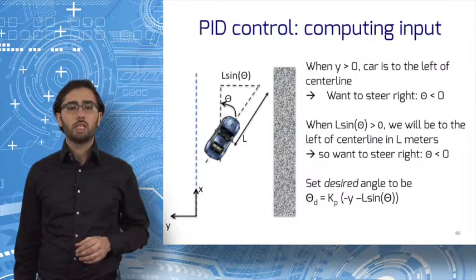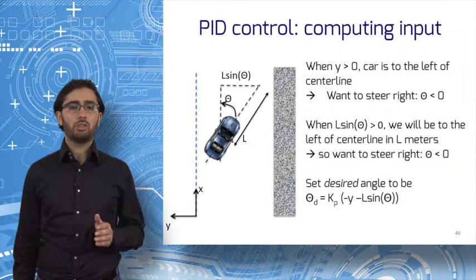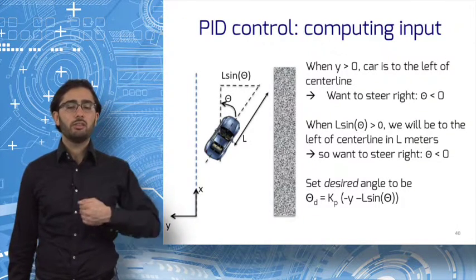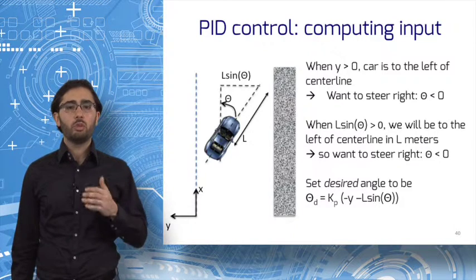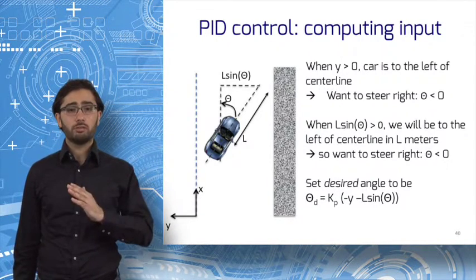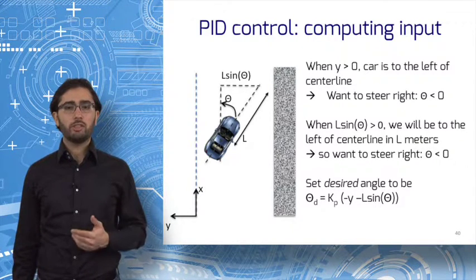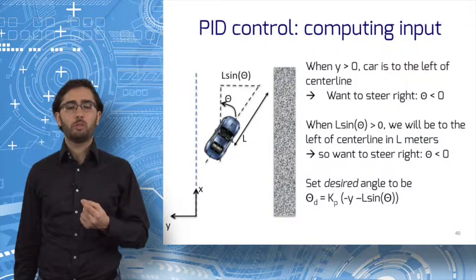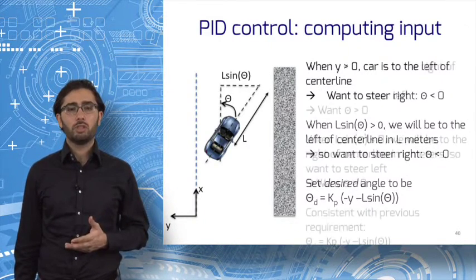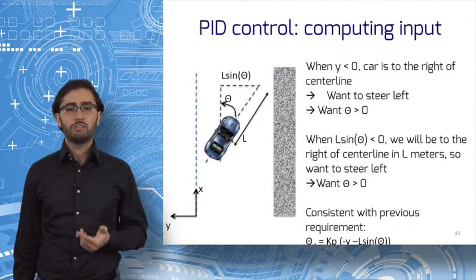Let's drive the error to zero. If y is positive, meaning the car is to the left of the center line, we want to steer right, i.e. have a negative theta. If l sine theta is positive, we will be pointed left in l meters. So again, we want to steer right with a negative theta. It is reasonable, therefore, to set the desired theta angle to a positive multiple of the error as shown. It is trivial to verify that this achieves the behavior we described. The case where y and l sine theta are negative can be reasoned about similarly.